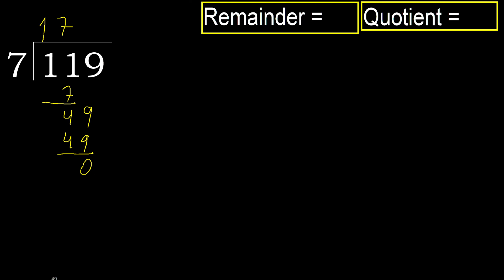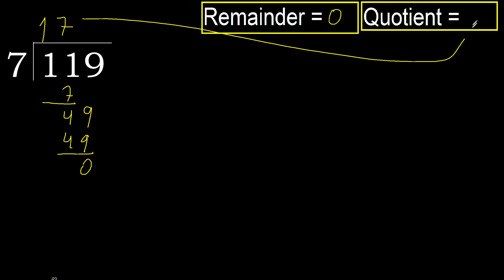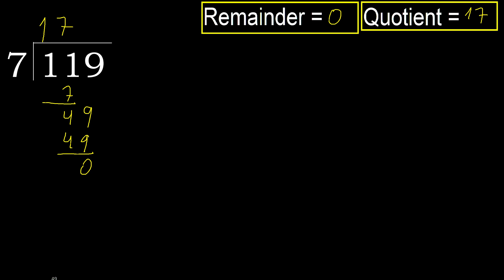There is no number, therefore finish it. 119 divided by 7 equals 17.